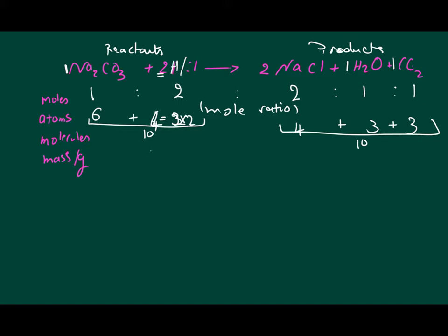The number of molecules is equivalent to the number of moles — the difference is that mole is a unit of quantity of matter, but molecules is just a number. So one molecule of sodium carbonate reacts with two molecules of HCl to give two molecules of NaCl, one molecule of H₂O, and one molecule of carbon dioxide.